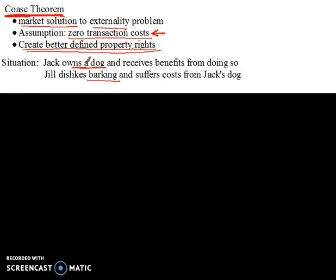Jack is the one who went out and bought the dog. The people internal to the trade were Jack and the person who sold him the dog. But Jill is suffering as a result of the trade — she is the non-consenting third party suffering from a negative externality. In a Pigouvian world, we would tax dog ownership. But how do we know how big that tax should be? There are measurement problems.